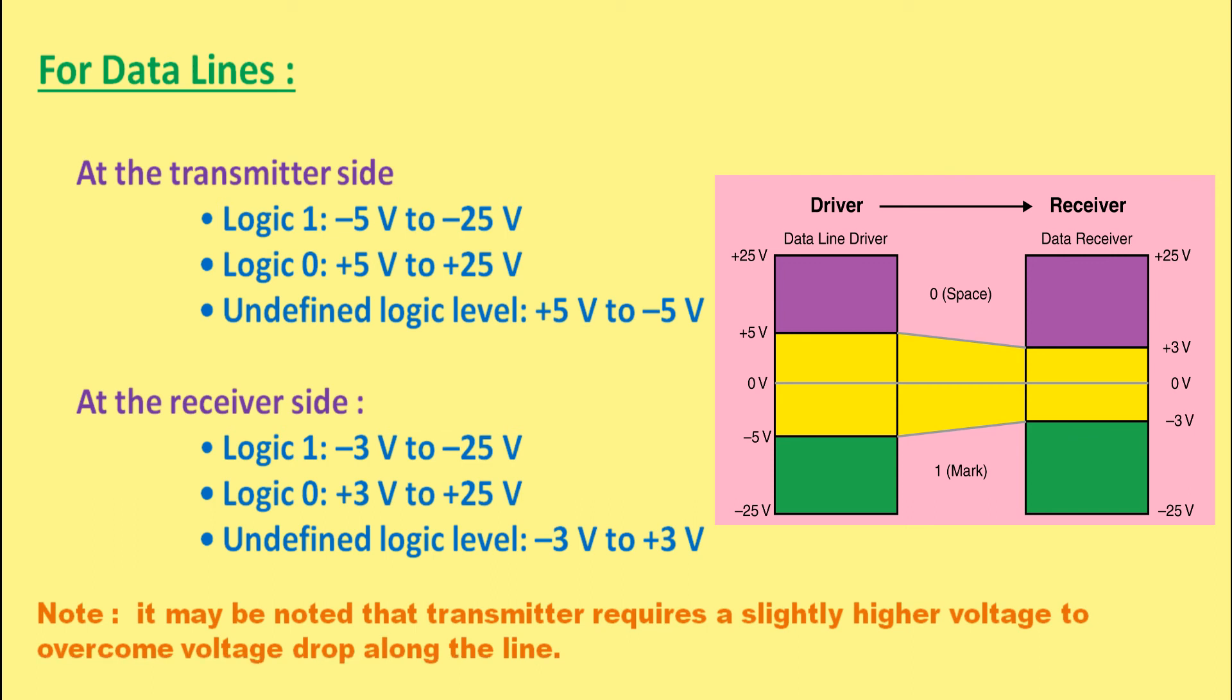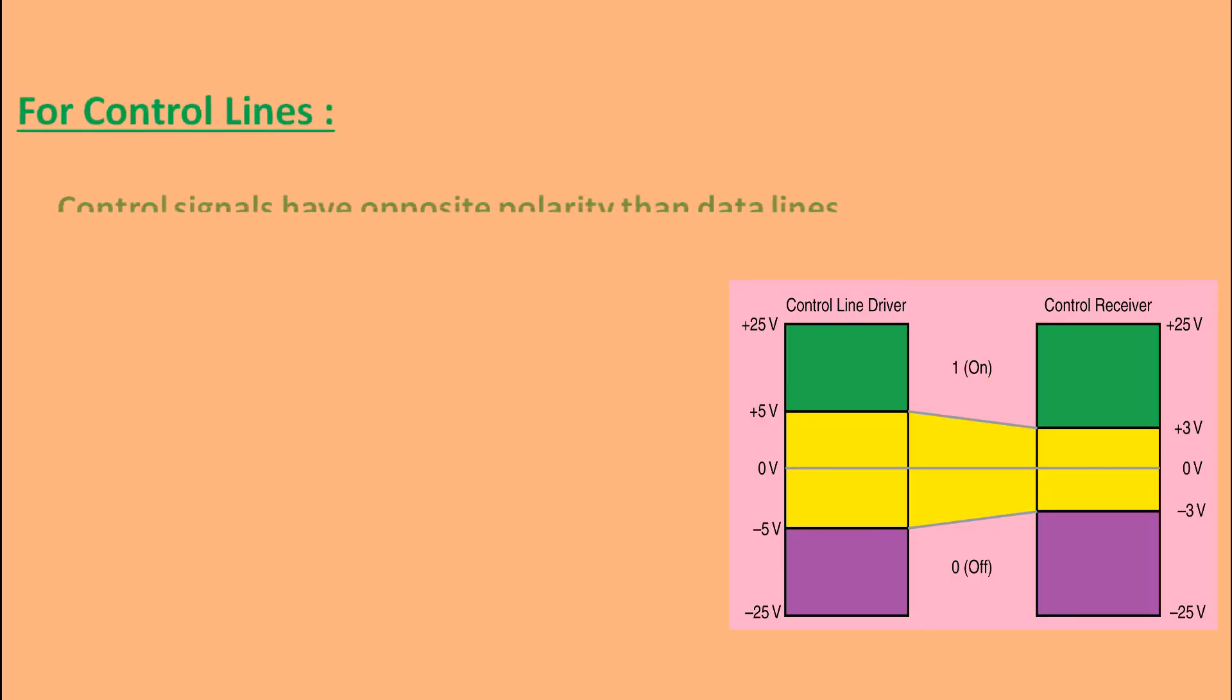Here it may be noted that transmitter requires a slightly higher voltage to overcome voltage drop along the line.